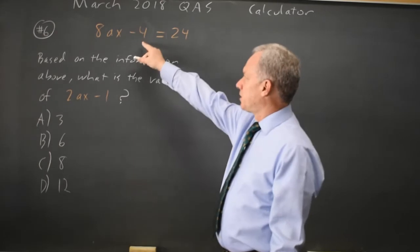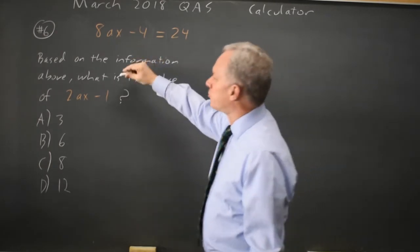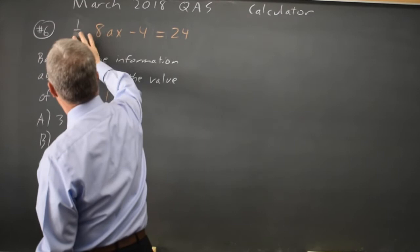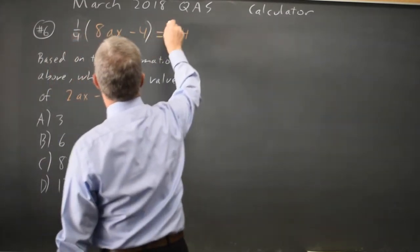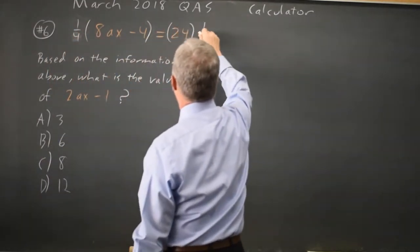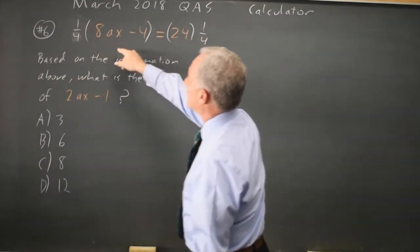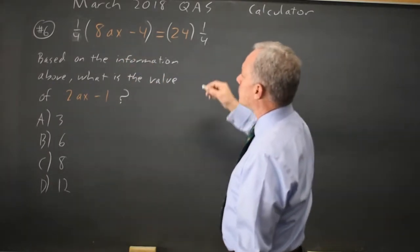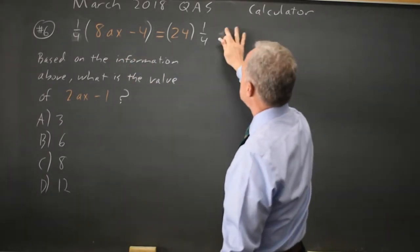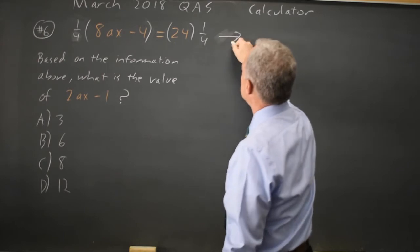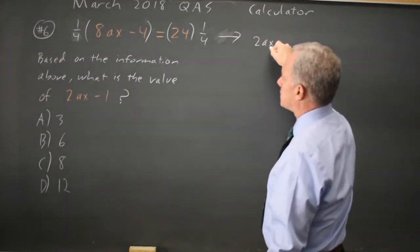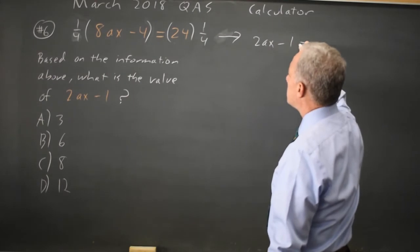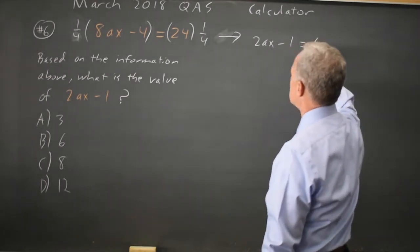The first thing I notice here is that all my coefficients are multiples of 4, so I'm going to multiply both sides by 1 fourth. 1 fourth of 8ax minus 4 is 1 fourth times 8, which gives me 2ax, and 1 fourth times negative 4 gives me minus 1. 1 fourth of 24 is 6.